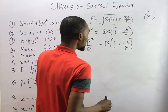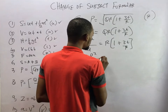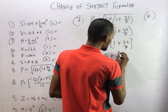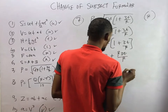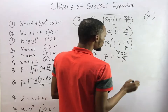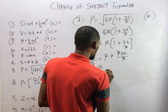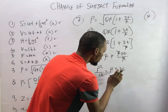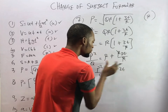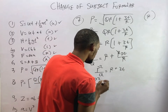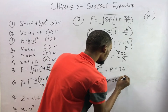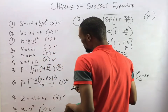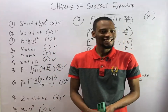Expanding the bracket: R times 1 is R, and R times 3T over R — the R cancels — giving 3T. So P squared over Q equals R plus 3T. Moving 3T to the other side: P squared over Q minus 3T equals R. Therefore R equals P squared over Q minus 3T. We've made R the subject formula.